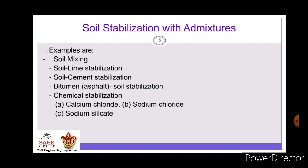In Soil Mixing, we mix another soil which will help it gain shear strength. In Soil Lime Stabilization, we mix the soil with lime. In Soil Cement Stabilization, we mix the soil with cement. Bitumen is also a material which we can use for soil stabilization. And finally, in Chemical Stabilization, we add a chemical to the soil to make it stabilized or to increase its bearing capacity or shear strength.